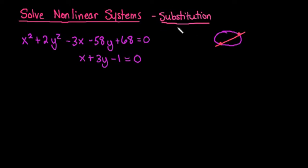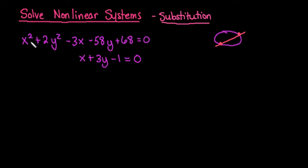We're going to use substitution. The reason I can't use elimination is because the first equation has an x squared and the second one has just an x term, so I can't get those to cancel out. In order to eliminate one of the variables, you have to be able to cancel them out, so we are going to use substitution.